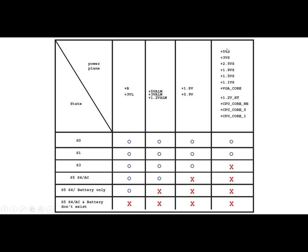Over here we have other powers: plus 5 volt, plus 3 volt, plus 2.5 volt, plus 1.8 volt, 1.5 volt, 1.1 volt. And we have the VGA card — this is basically a graphics card. Over here we also have other powers like the CPU core for the North Bridge. The North Bridge is basically the main power for the chipset. Here we have the CPU core, and we have two channels for the CPU because the processor usually has two channels or more.